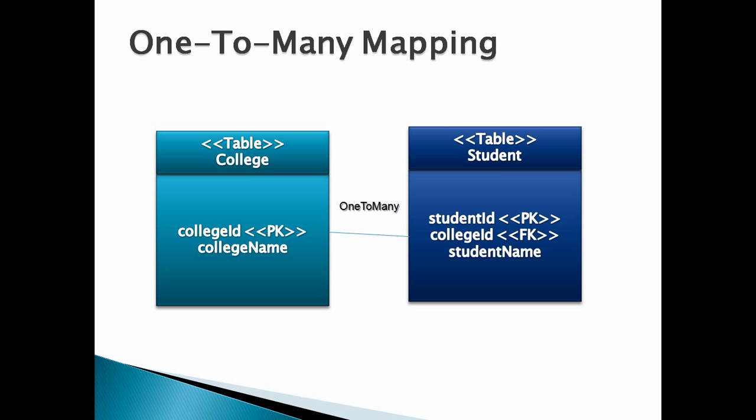How is this relationship represented in the entities? The college entity has a reference to a list of students, as a college can have many students. The student entity has a reference to college. The annotations used to demonstrate this are @OneToMany and vice versa (@ManyToOne).